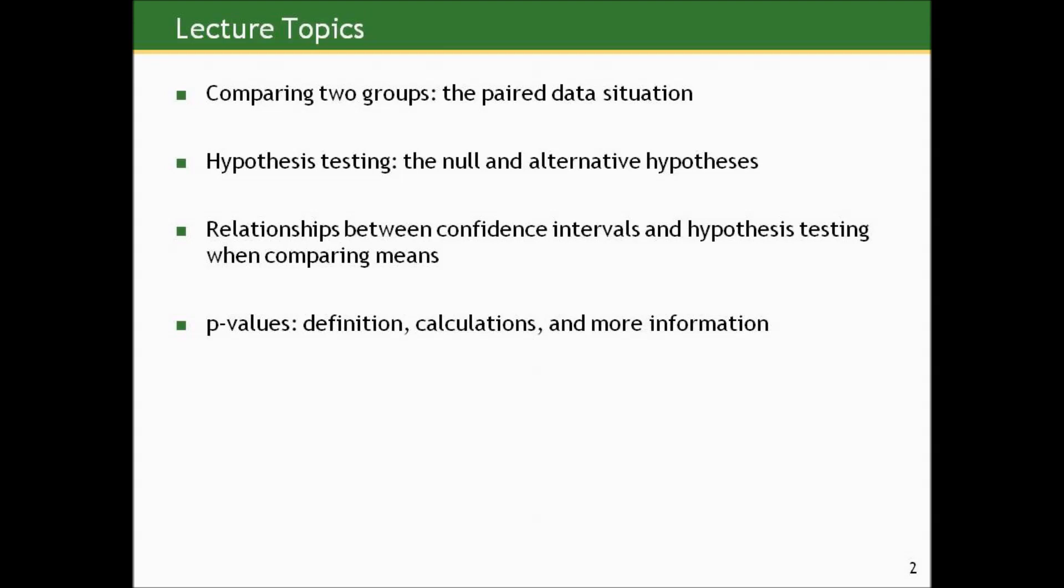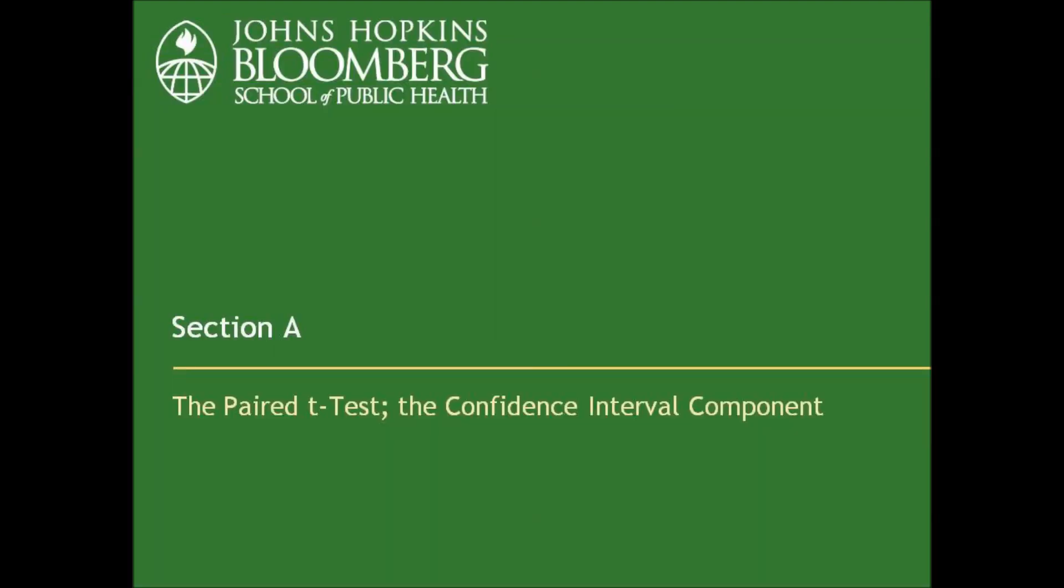What we're going to get into in this set of lectures is comparing two groups based on their means in the paired data situation. We're going to use this as a springboard to introduce the idea of statistical hypothesis testing and define what are called the null and alternative hypotheses. We'll talk about the relationships between confidence intervals and hypothesis testing when comparing means, and we'll spend a fair amount of time talking about something called a p-value - defining it, how to compute it, what it can tell you, what it can't tell you, and other good stuff.